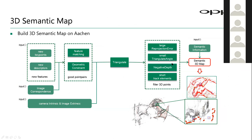Our mapping stage did not change greatly. We used the ground truth image extrinsics provided in the AACHEN dataset to triangulate 3D points, and used these to filter the 3D points. We also added semantic labels to every 3D point during the mapping stage.